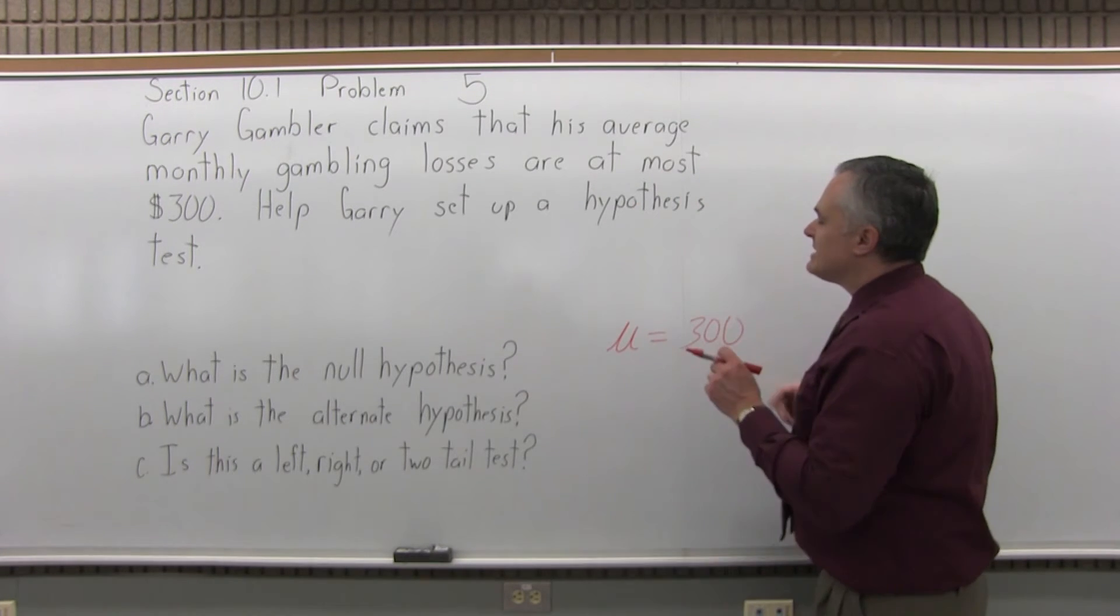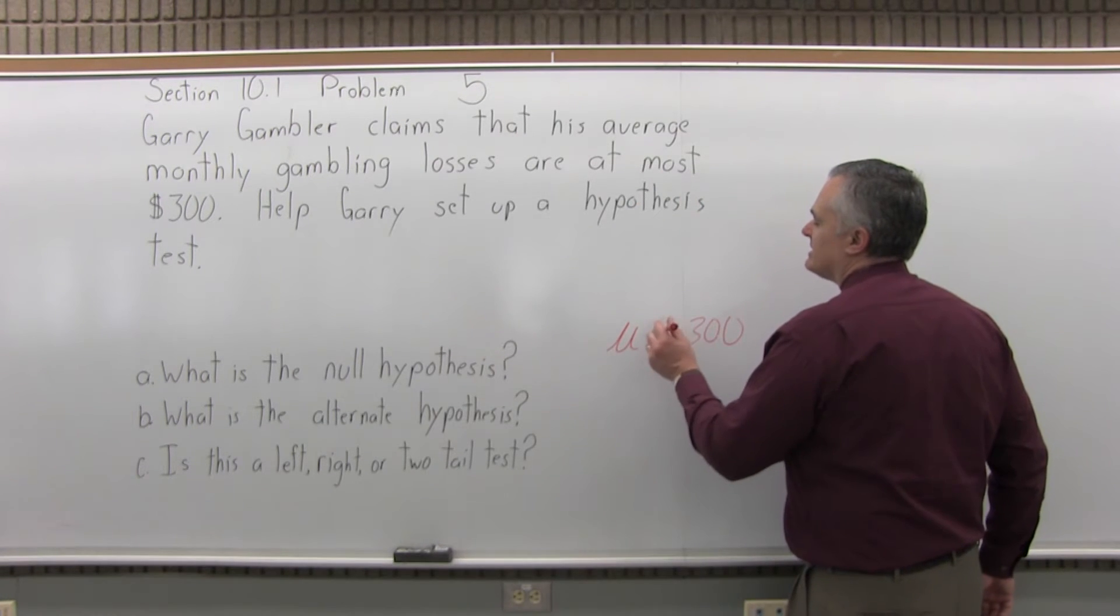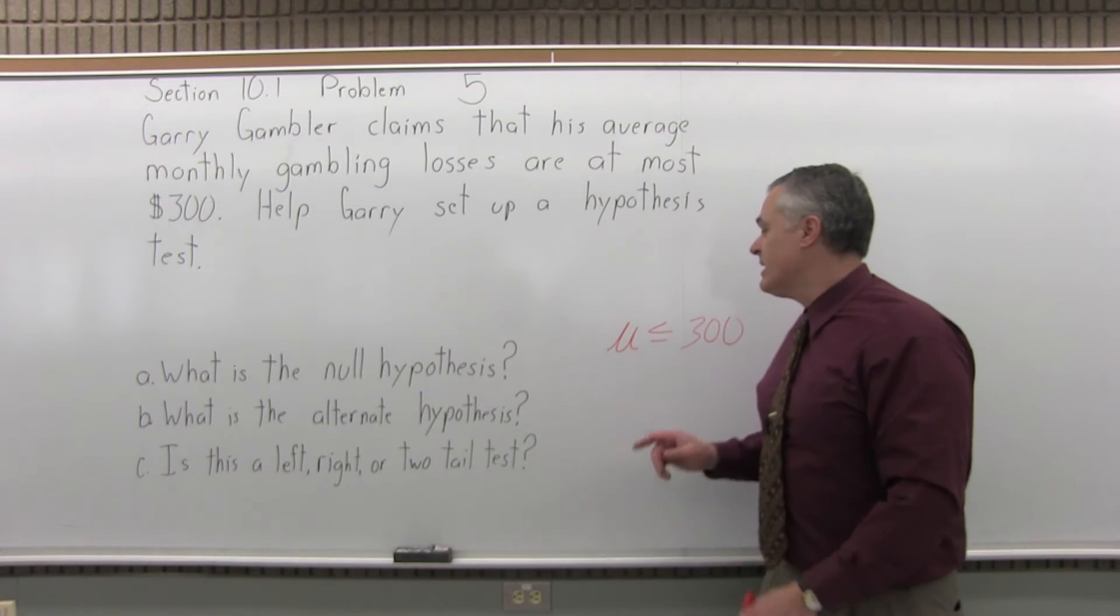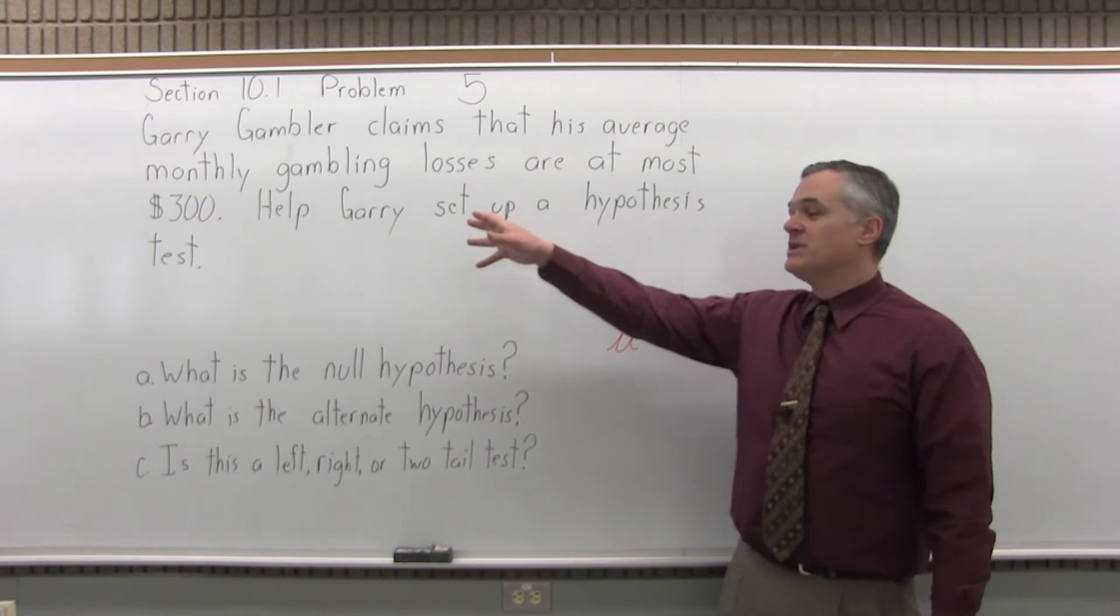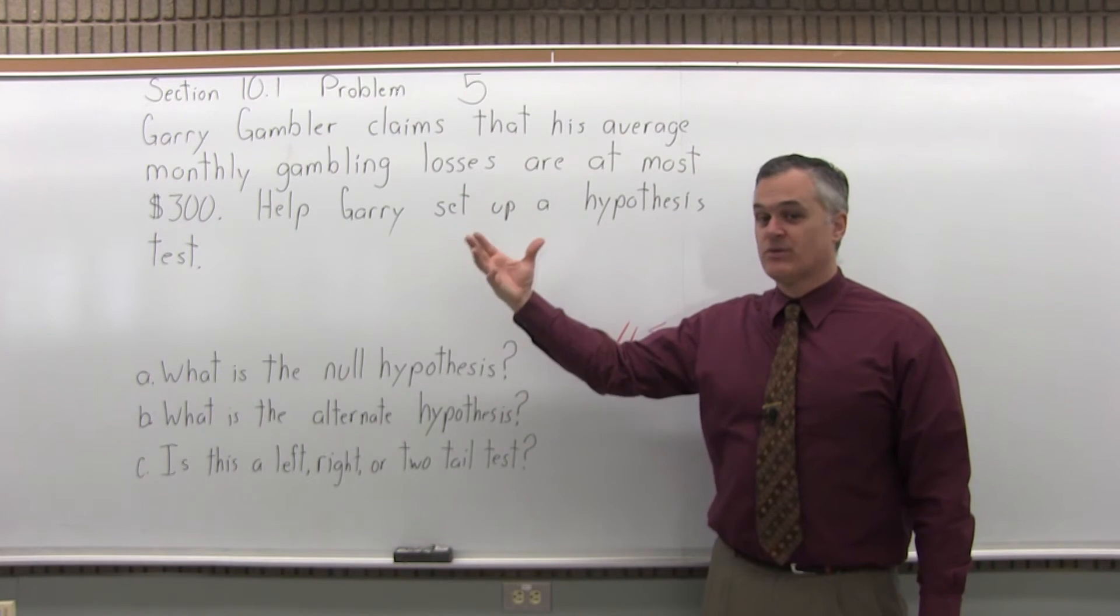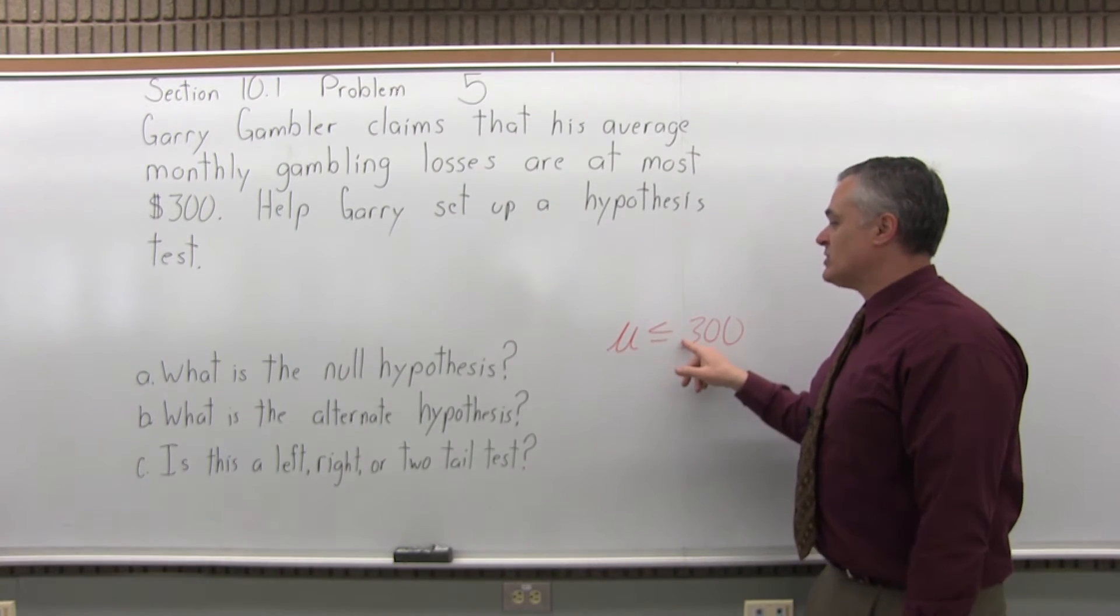At most means that's the most it could be. So he claims that his gambling loss is less than or equal to 300. 300 is the most. The real number is 300 or less. That's what he means by at most 300.